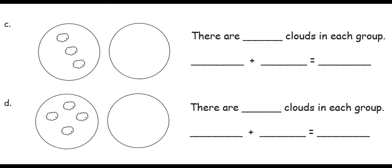The next question starts with three clouds in the group. I'll copy that. There are three clouds in each group, and 3 plus 3 equals 6 clouds altogether.